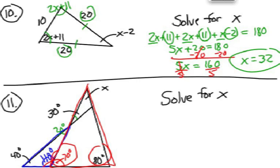Did you figure it out? 70 plus 80 is 150. Therefore, X must be 30 degrees. Congratulations. Good job.